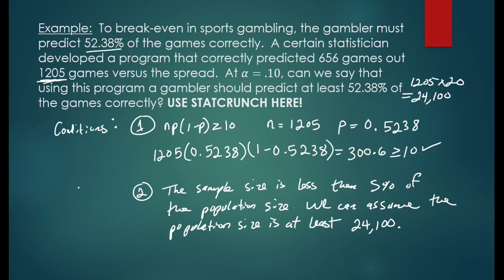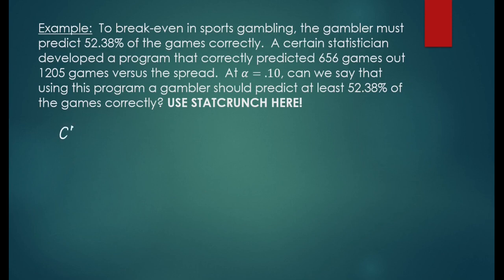The conditions are met. Now we can start the problem. The claim: using this program, the gambler should predict at least 52.38% of the games correctly. The claim is the proportion is at least 0.5238. Now the complement to that is the opposite, so we're going to say p is less than 0.5238.